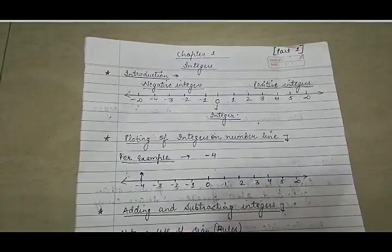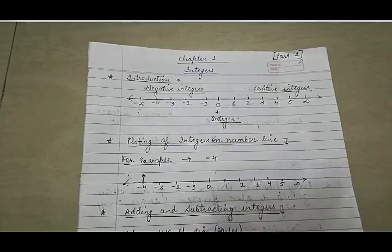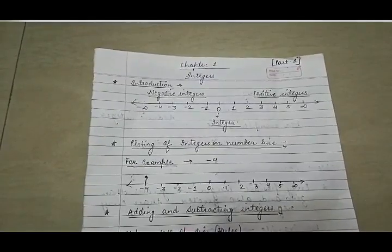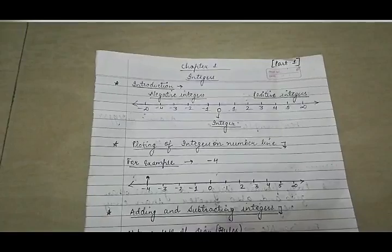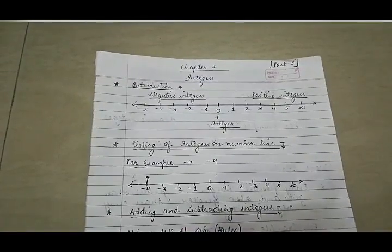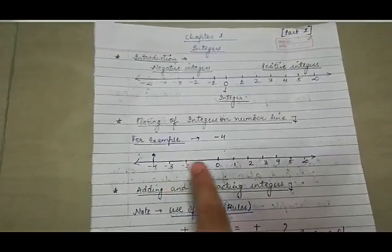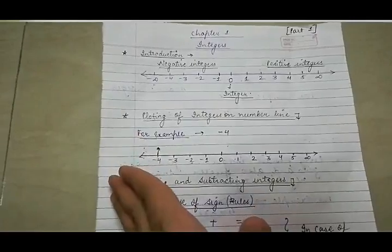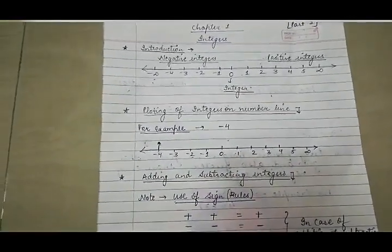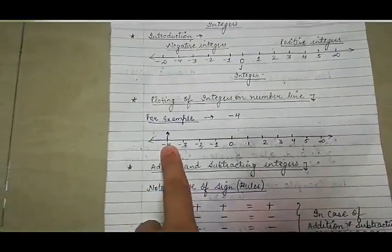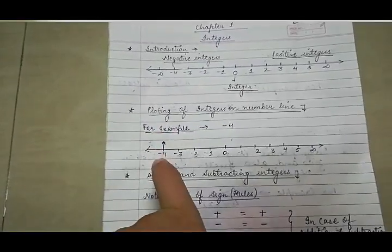Now let us see the plotting of integers on a number line. I have taken the example of minus 4. To plot an integer, first draw a number line, write 0, represent positive integers on the right hand side and negative integers on the left hand side. Don't make the mistake of not starting at the right place — always start minus 1 just to the left of 0 and plus 1 just to the right of 0. Then locate minus 4 on the number line. I hope plotting of integers is clear.